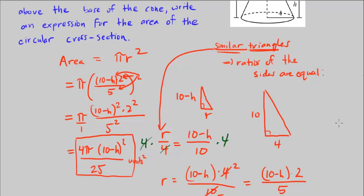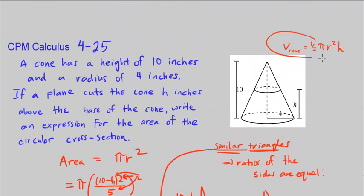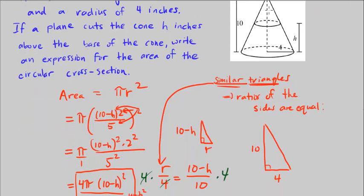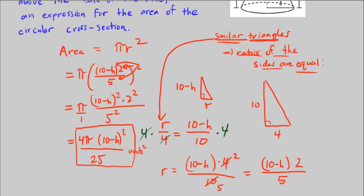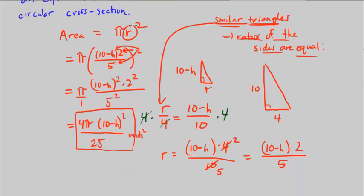And one interesting thing to note is we do not need to know the volume formula for the cone, because we can just see these are similar triangles. And that means the ratios of all the sides are equal. We could find the radius from that.